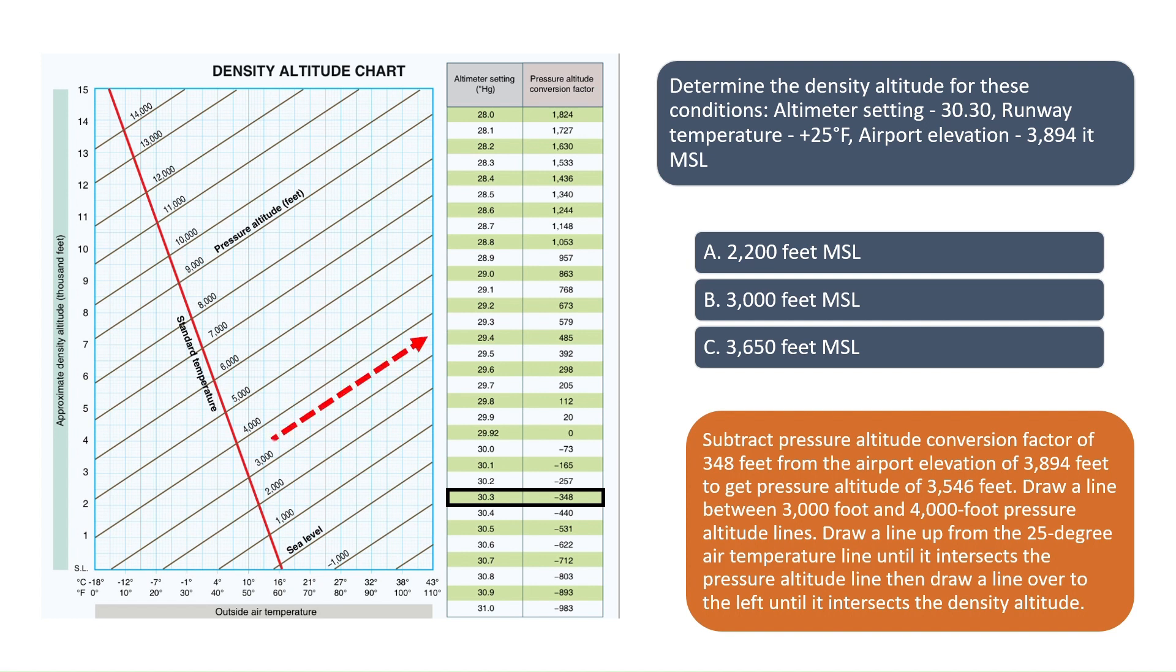Then draw a line up and to the right roughly halfway between the 3,000 and 4,000 foot pressure altitude lines since 3,546 feet is roughly halfway between 3,000 and 4,000. Next, draw a line up from the 25 degree outside air temperature line at the bottom of the chart until it intersects the red pressure altitude line. Finally, draw the line over to the left to find that the line ends up just above the 2 in the chart.